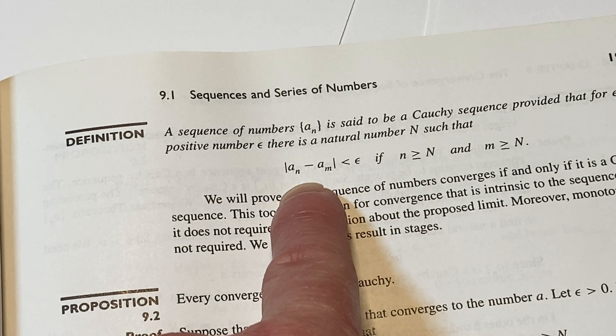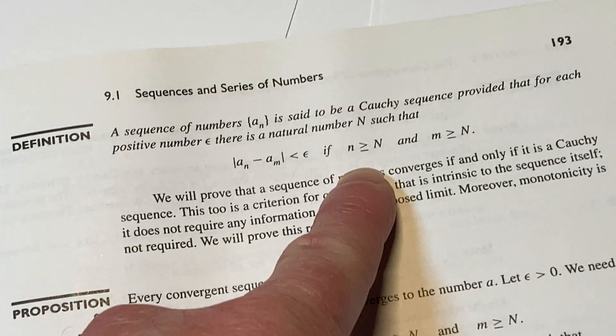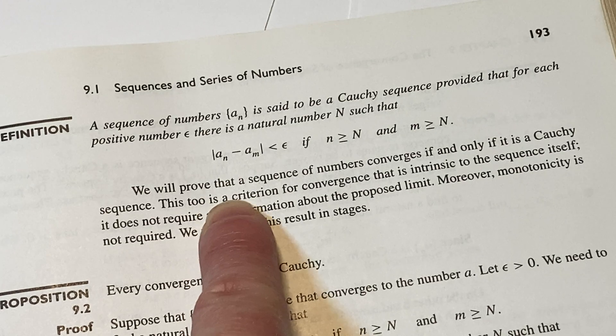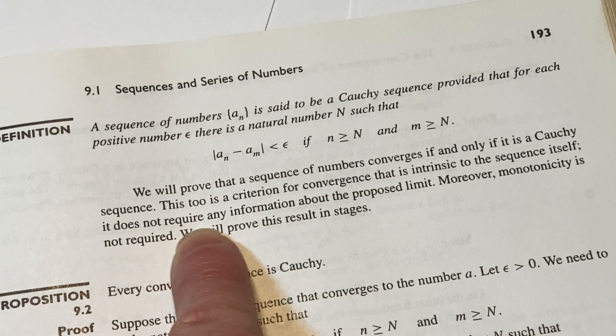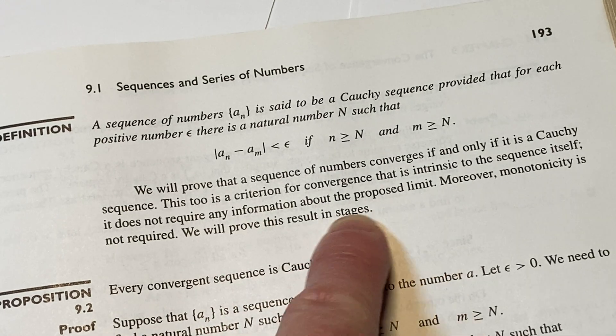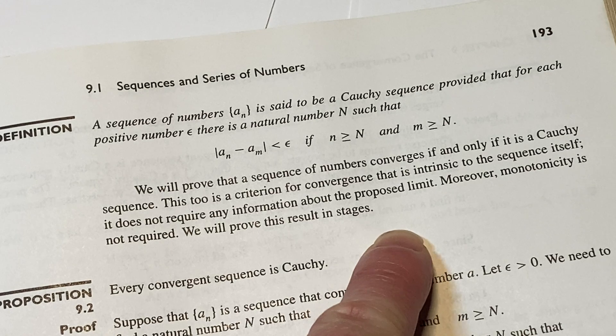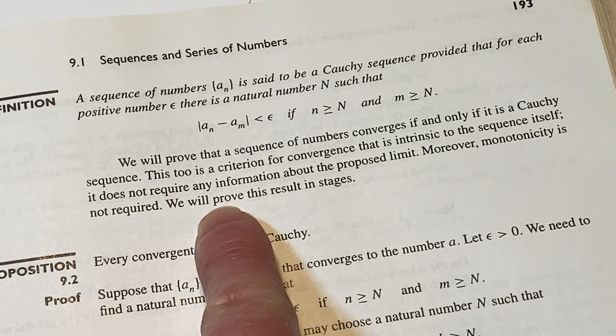The absolute value of a sub n minus a sub m is less than epsilon if n is greater than or equal to N and m is greater than or equal to N. We will prove that a sequence of numbers converges if and only if it is a Cauchy sequence. This, too, is a criterion for convergence that is intrinsic to the sequence itself. It does not require any information about the proposed limit. Moreover, monotonicity is not required.